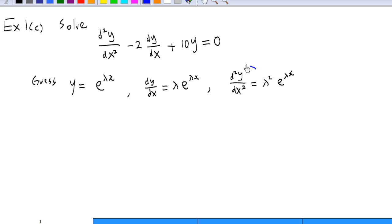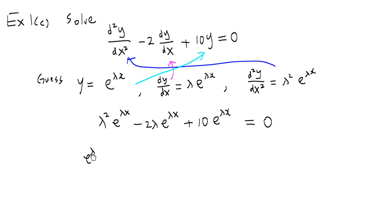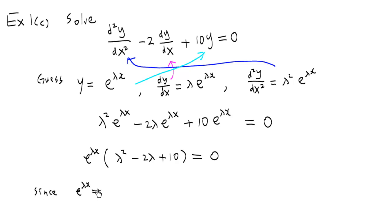Substituting d²y/dx², dy/dx, and y, we get λ²e^(λx) minus 2λe^(λx) plus 10e^(λx) equals 0. Factor out e^(λx): we get e^(λx) times (λ² minus 2λ plus 10) equals 0. Since e^(λx) will never equal 0, we need to solve the quadratic equation λ² minus 2λ plus 10 equals 0.